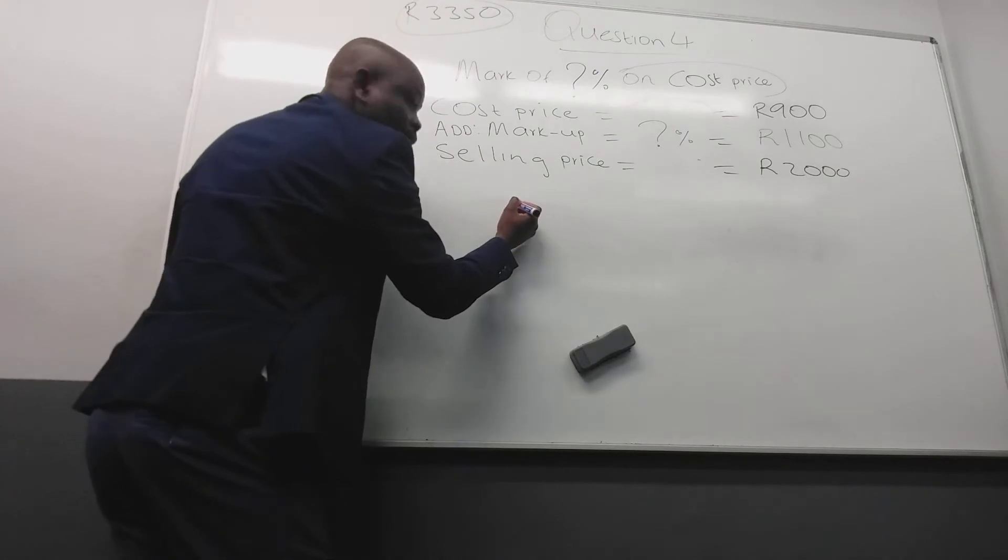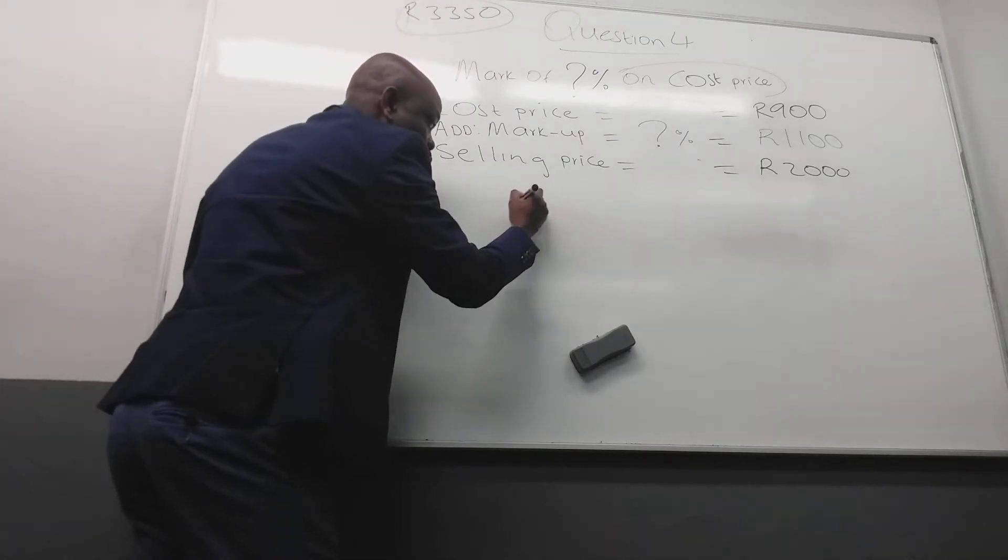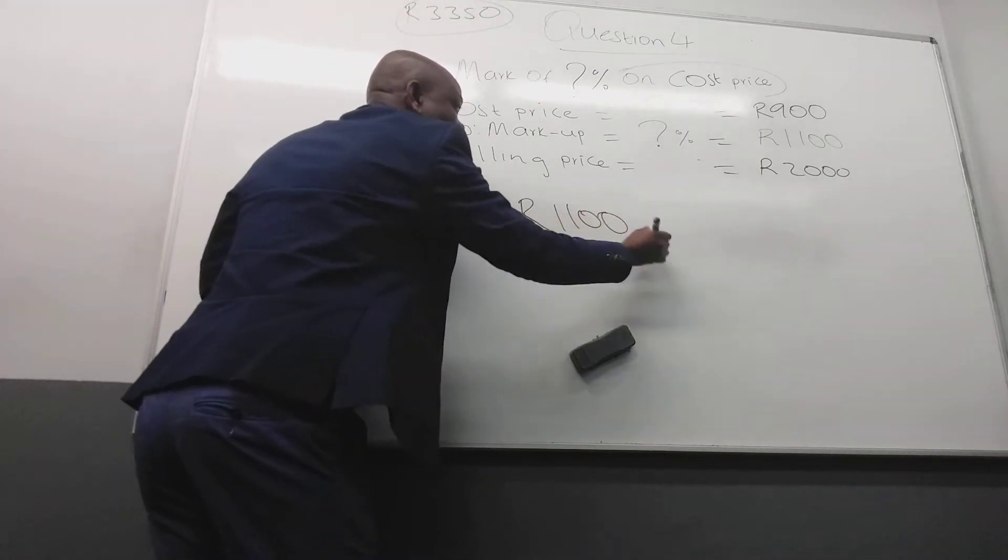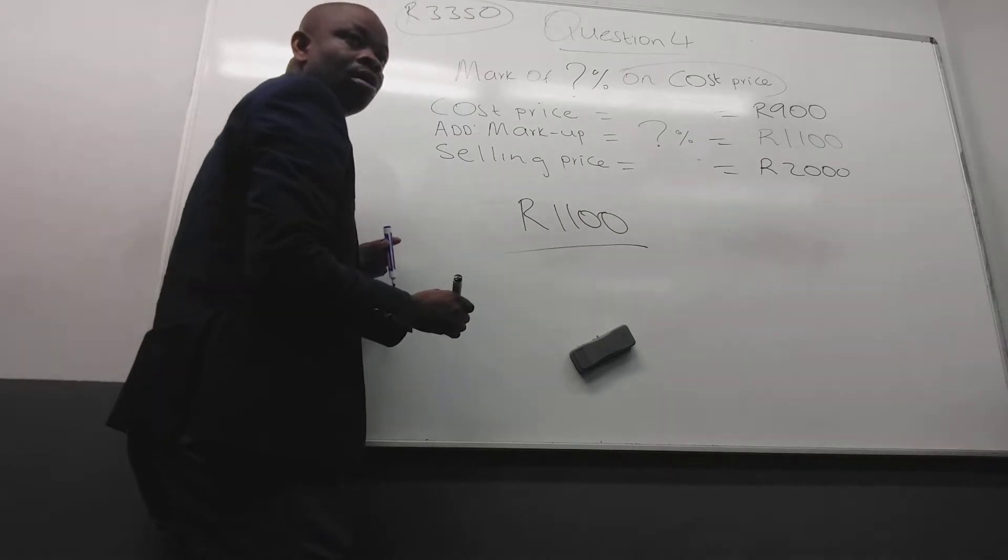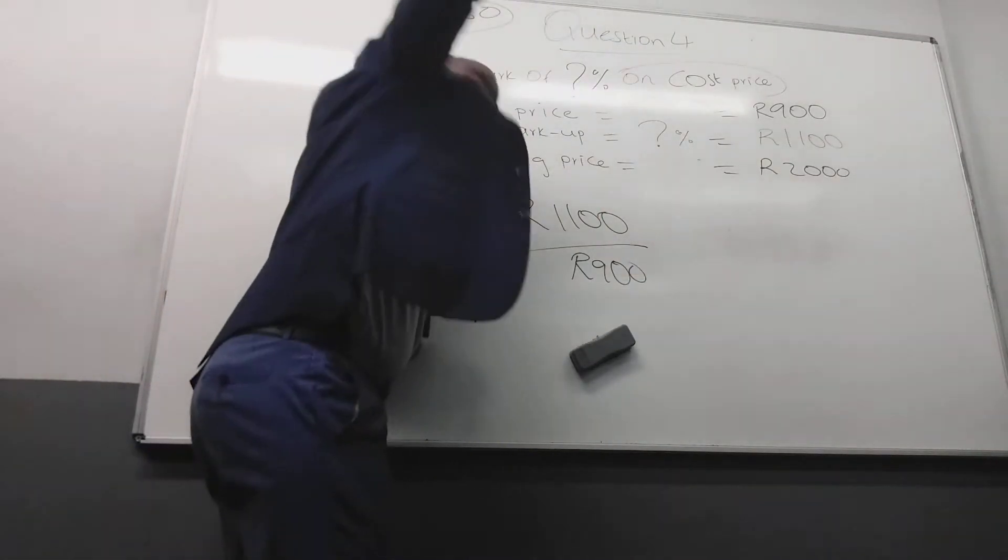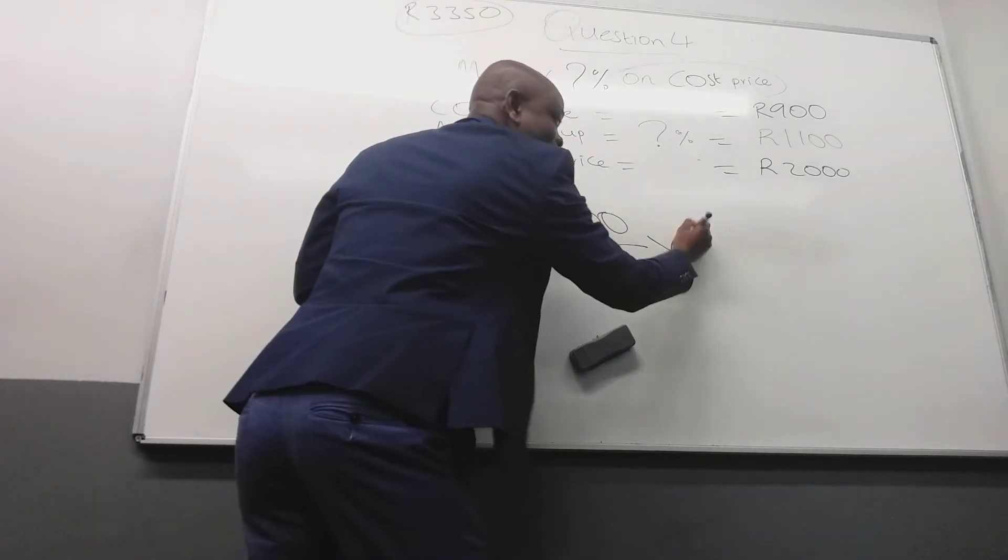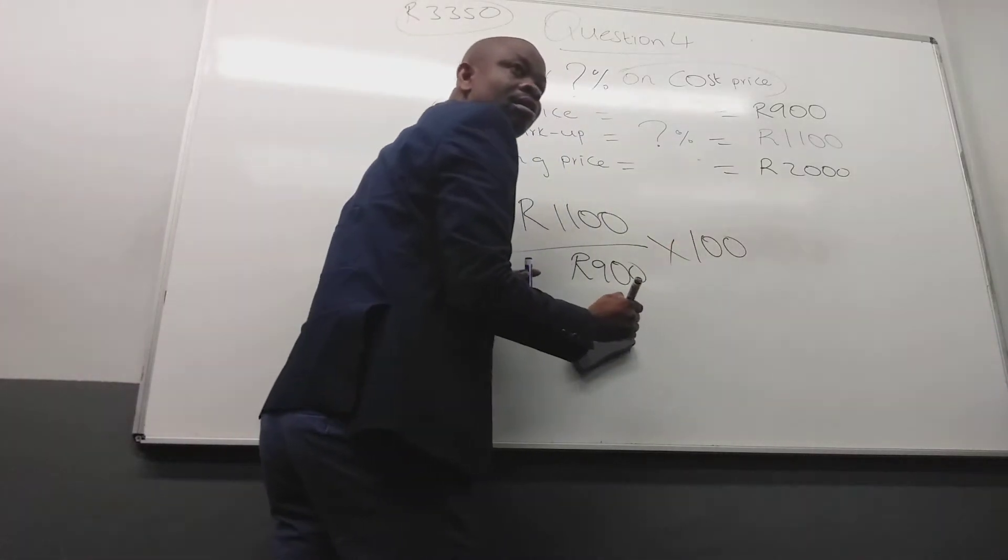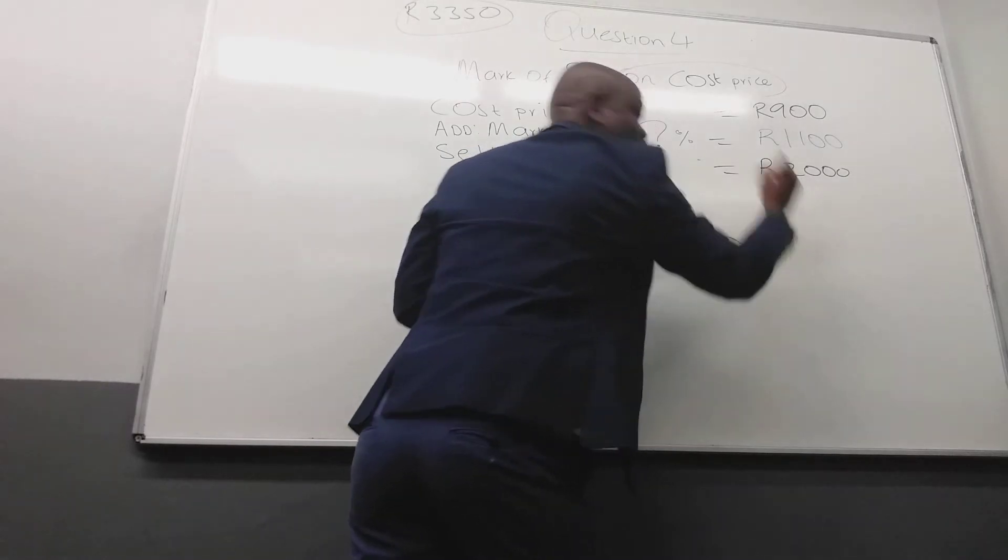Okay, give me the markup then. One thousand? One hundred. Give me the cost. Nine hundred. Markup on cost. And you express by much like this, by what? Can you see how do we find it? And how much is the percentage?